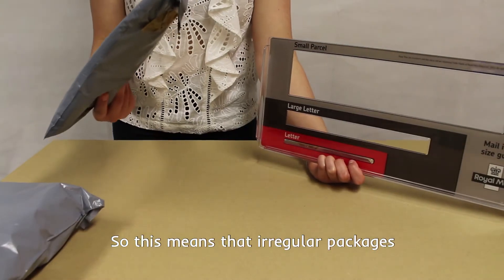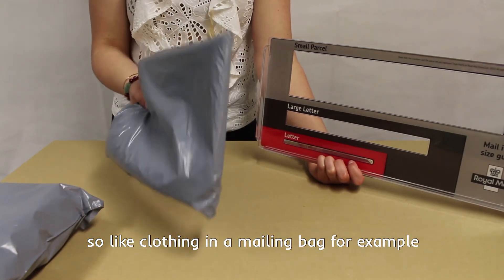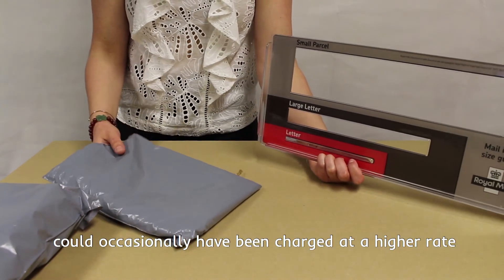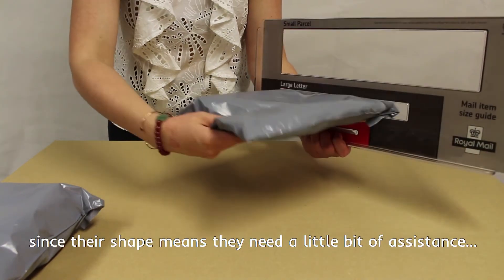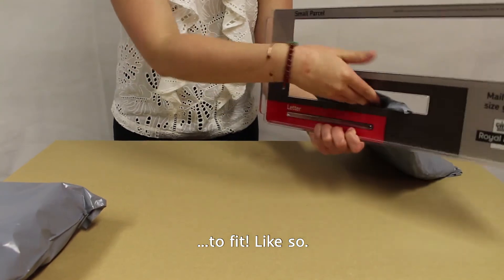So this means that irregular packages like clothing in a mailing bag for example could occasionally have been charged at a higher rate to send as a small parcel since their shape means they need a little bit of assistance to fit like so.